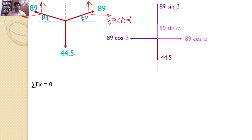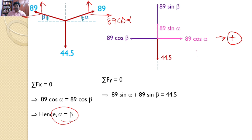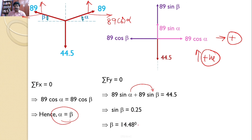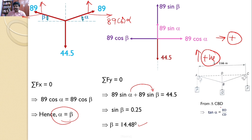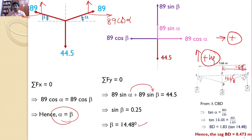Applying equilibrium: sigma Fx equals 0 gives 89·cos(alpha) equals 89·cos(beta), hence alpha equals beta. Sigma Fy equals 0, taking upward as positive, gives 89·sin(beta) plus 89·sin(alpha) equals 44.5. Since alpha equals beta, this simplifies to 2·89·sin(alpha) equals 44.5, so sin(alpha) equals 0.25 and beta equals 14.48 degrees. Using triangle CBD with tan(14.48°) equals BD divided by 1.83 m gives BD equal to 0.473 meters.